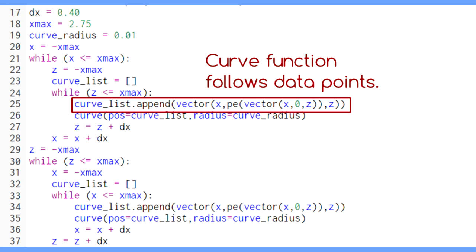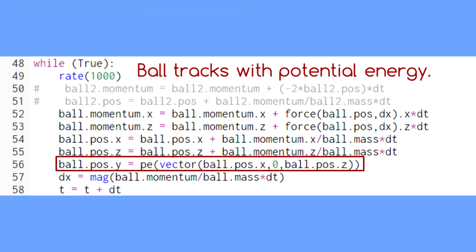We create the rubber sheet using VPython's curve function, which you can learn more about in the video link in the description below. Then, as we move the ball along the X and Z directions under the influence of the potential energy,